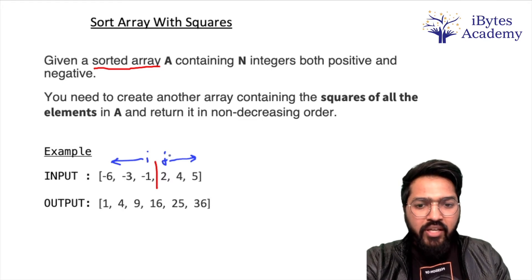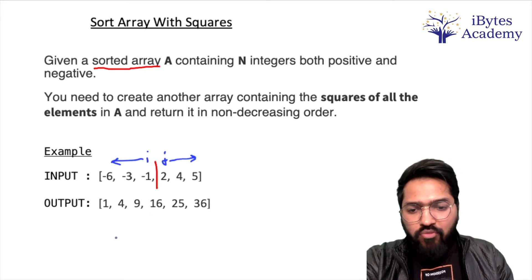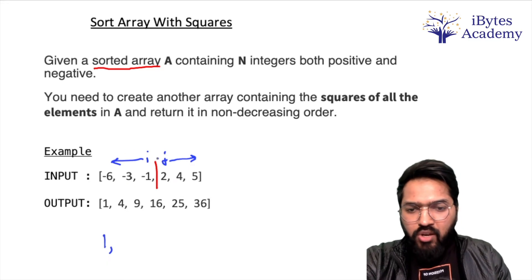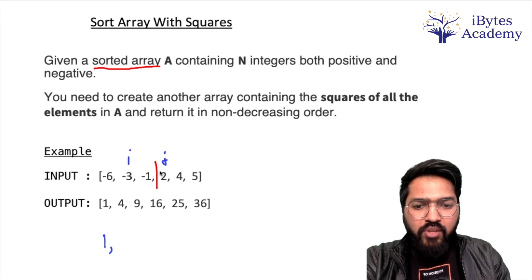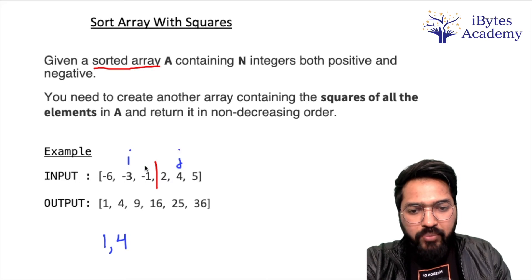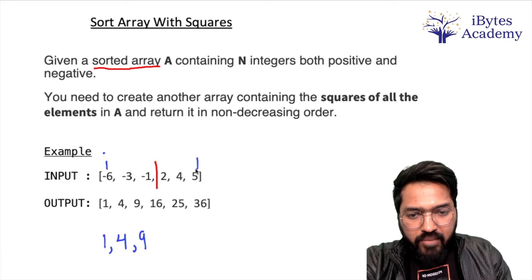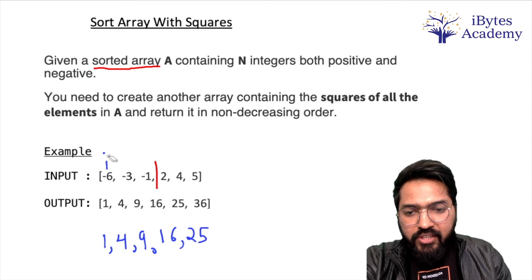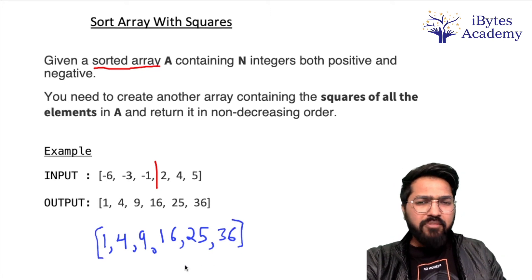So basically ab karna kya hai: i aur j pe joh bhi values rakhi hai inki jiski absolute value kam hai usko uthane pehle. Jaise minus 1 aur 2 absolute value kiski kam hai? Minus 1 ki kam hai, so obviously ab minus 1 ka square 1 pehle humm log aapne nye array me daal dein. Now j aaghe badhti jahe ga. Aagli baar mein j hummara khatam ho jahe ga, that is 25 yahan peh aajae ga and joh ek bache ga yahan se uska 36 humm log daal dein. So this is going to be our output. I hope this is clear.